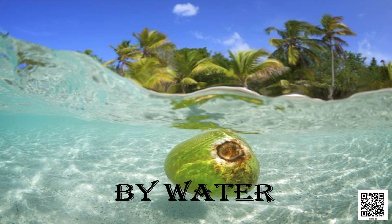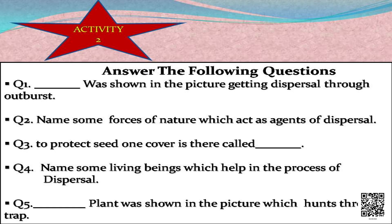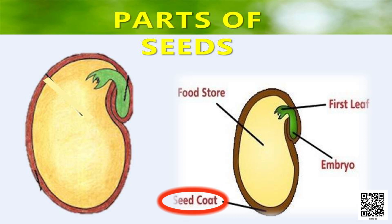Wind and water are the forces of nature that act as the agents of dispersal. Now the next question was: to protect a seed, one cover is there — what is it called? It is the seed coat. It is called the seed coat — it's a dry outer external cover which protects the seed inside it.